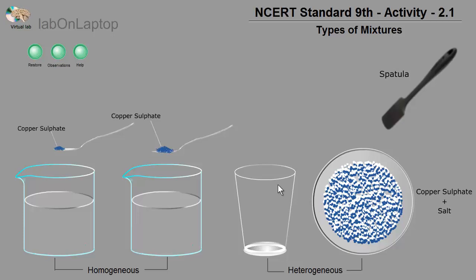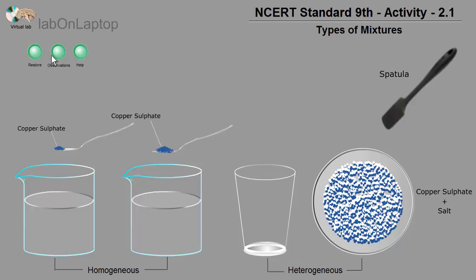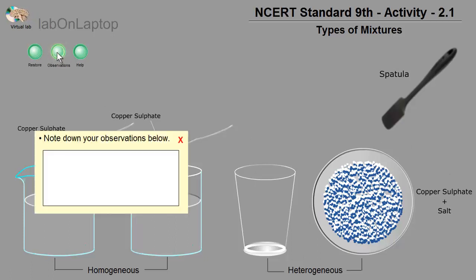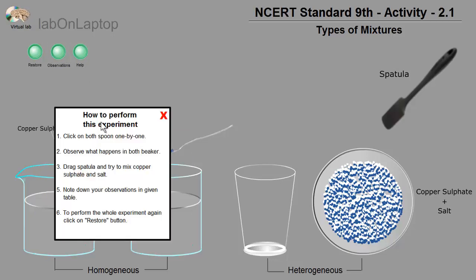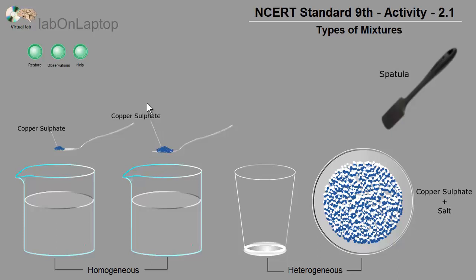First, let's see what has been given here. I have explained these 4 things. You have a restore button — if you want to repeat this whole experiment, click the restore button and it will come back to the same starting position. Here, you have to note down your observations in the observation table. And there is also a help section that you can use to learn on your own.